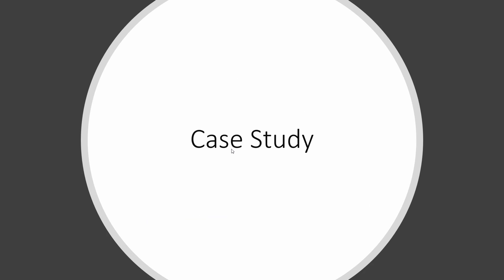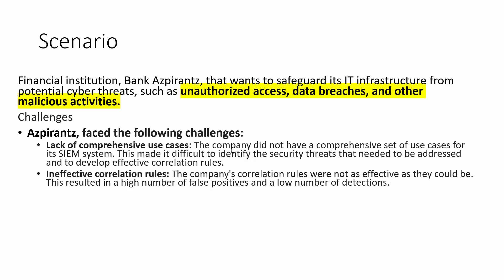We have two objectives here. The primary objective is to create and implement use cases that address specific security concerns within the organization. The secondary objective is to develop correlation rules that enable the SIEM to detect and respond to identified security threats or events. To understand this in more detail, we have a case study. A financial institution called Aspirant Bank wants to safeguard its IT infrastructure from potential cyber threats.